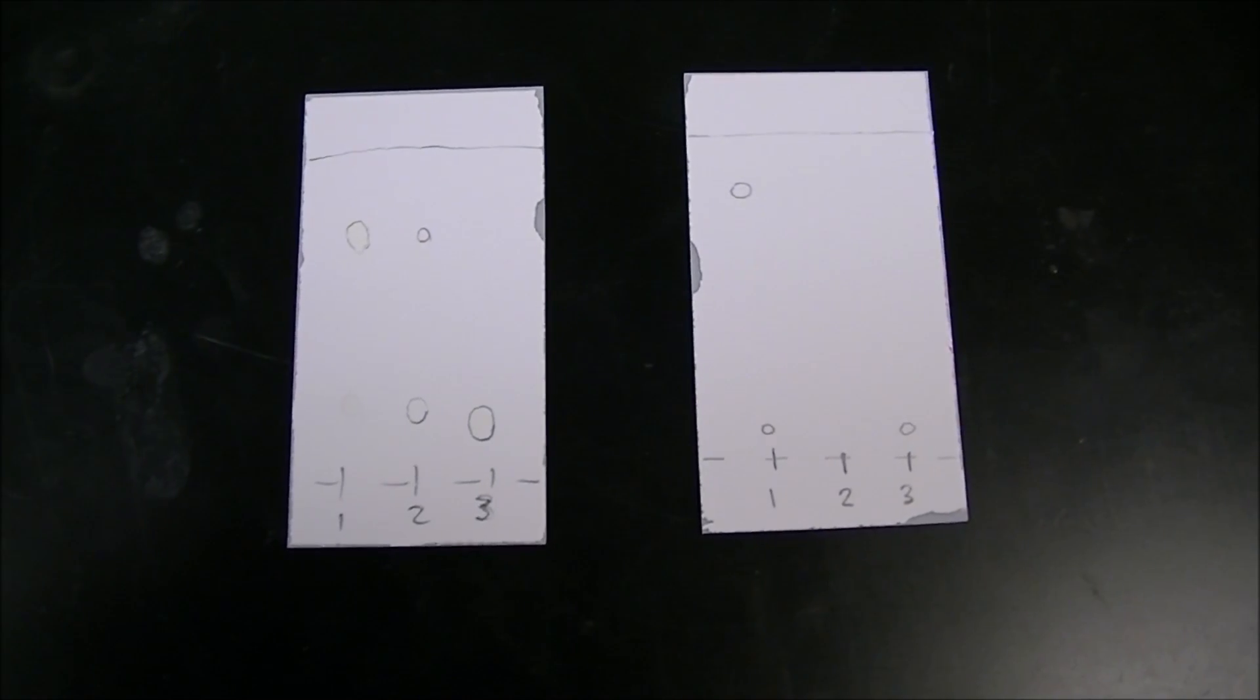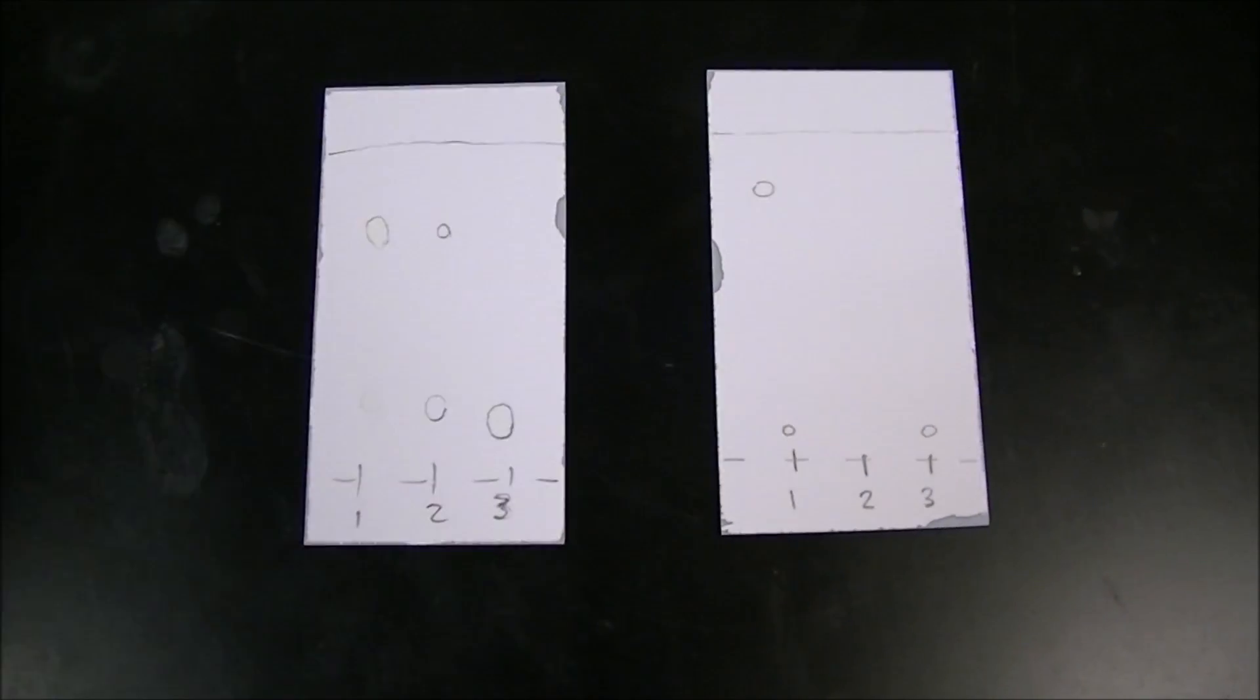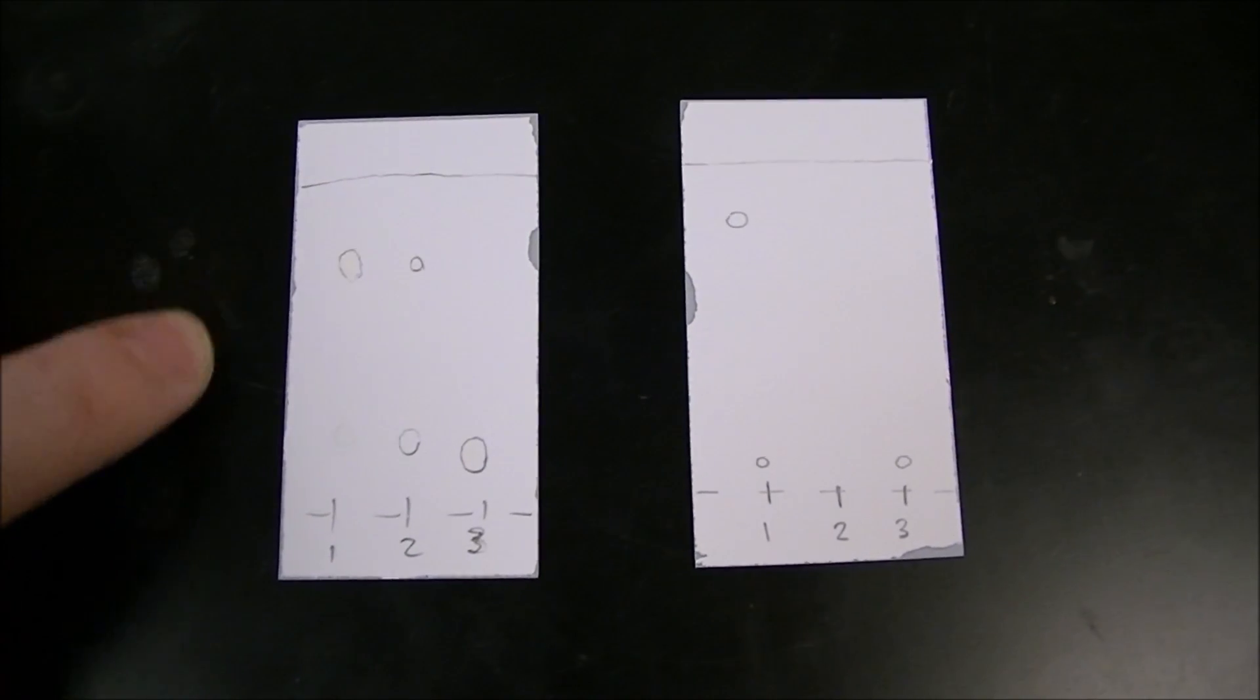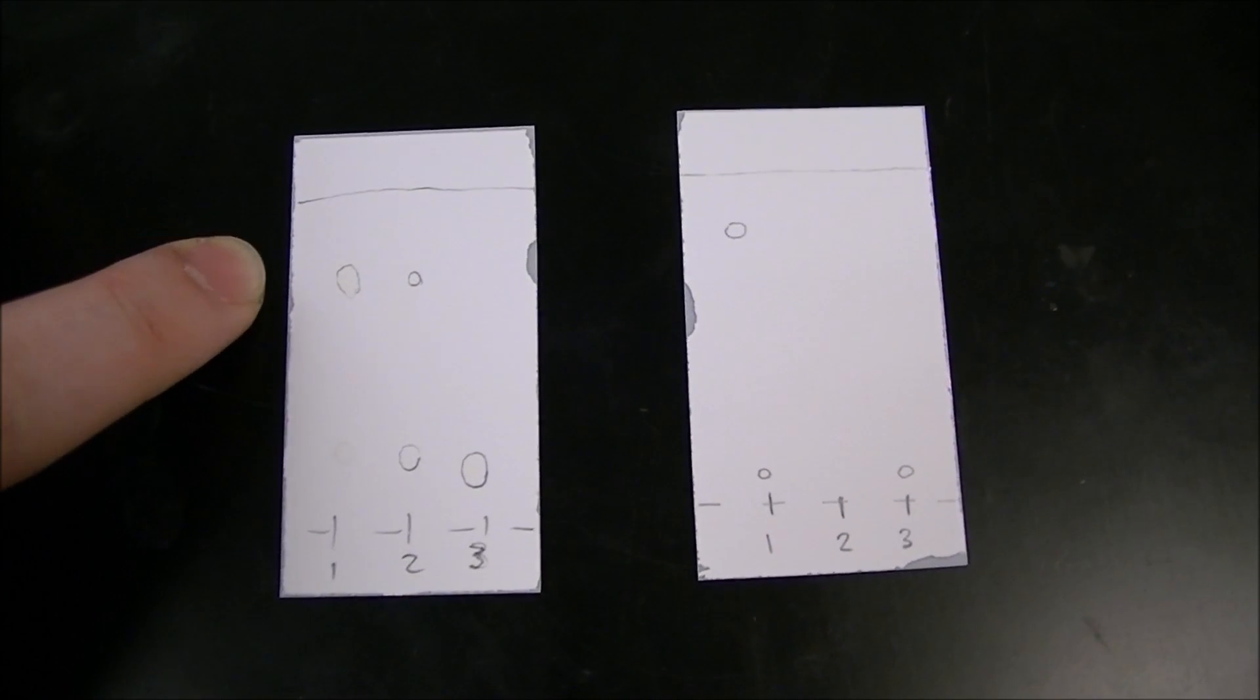We have two TLC plates here from this experiment. The one on the left is ideally what you will get where you have the first lane is basically just the trans isomer. The middle lane is about half and half and the last lane is just the cis isomer.